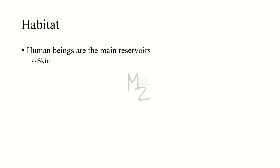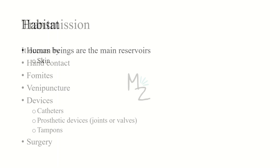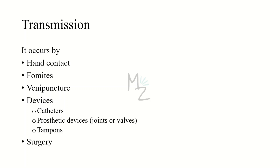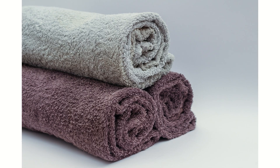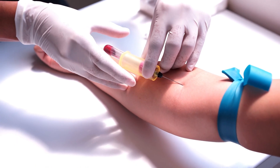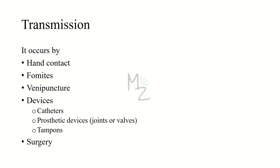Habitat: human beings are the main reservoirs, but for Staphylococcus epidermidis, it mainly exists on the skin of human beings. Transmission occurs by hand contact, fomites like towels or clothing, venipuncture, and certain devices like catheters — including urinary catheters — prosthetic devices like prosthetic joints such as prosthetic hip joints and prosthetic heart valves, and certain other devices like tampons, nasal packings, and surgery lap pads. Wounds after surgery can also be a means of transmitting Staphylococcus epidermidis from skin into the body, causing infection.